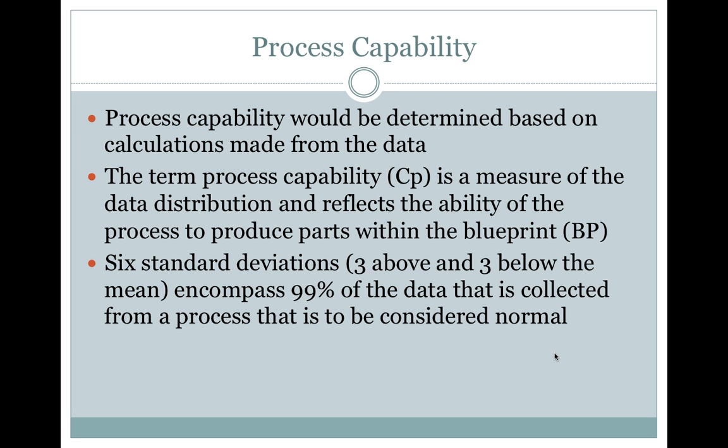Process Capability. Process capability would be determined based on calculations made from the data. The term process capability is a measure of the data distribution and reflects the ability of the process to produce parts within the blueprint. Six standard deviations, three above and three below the mean, encompass 99% of the data that is collected from a process that is considered to be normal.